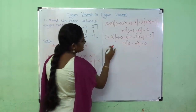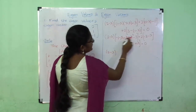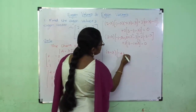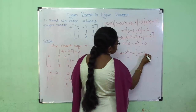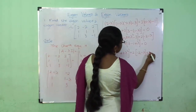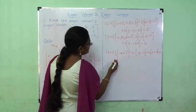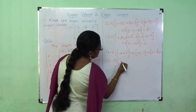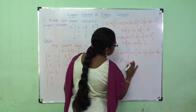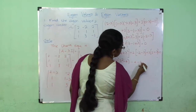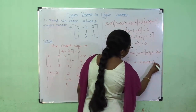Simplifying further: (2-λ) times [λ and -λ cancel, leaving -4 + λ²] plus 2 times [-2 - λ] plus 2 times [2 + λ], which equals 0. Expanding: 2 times (-2) gives -4, 2 times (-λ) gives -2λ; then 2 times 4 gives +4 and 2 times λ gives +2λ, which equals 0.